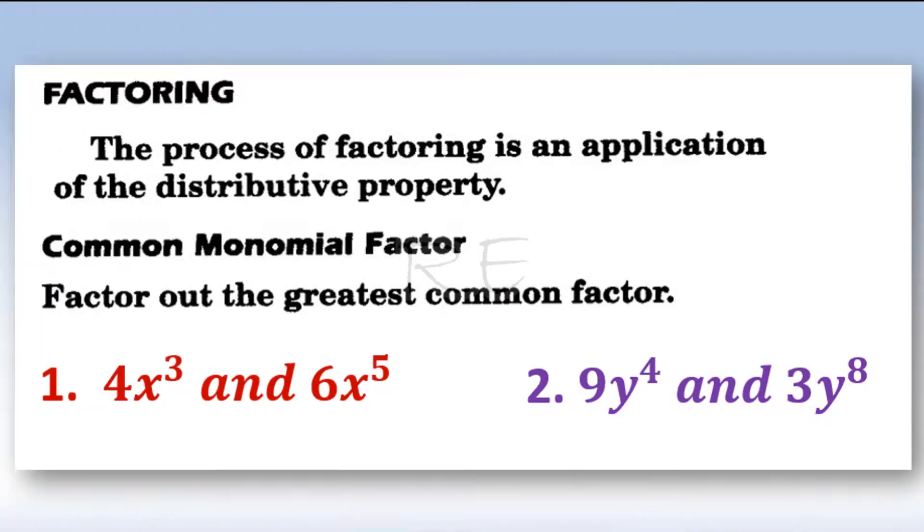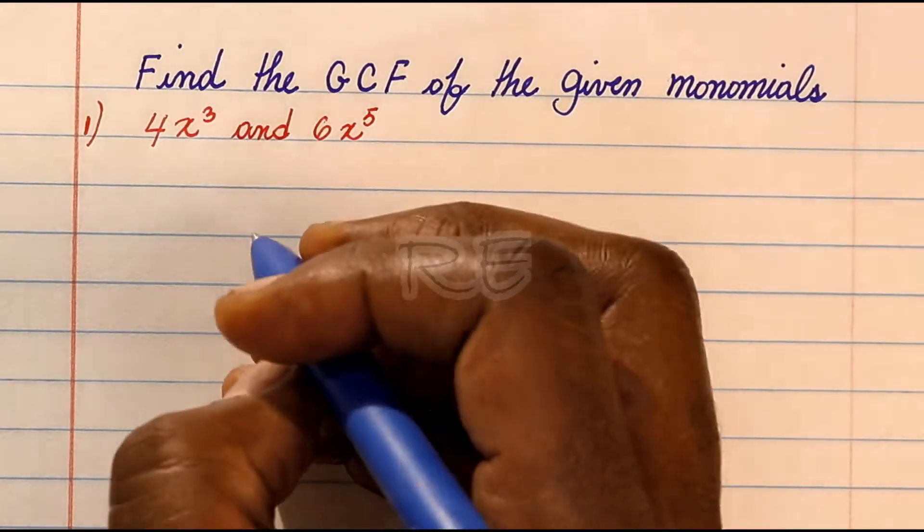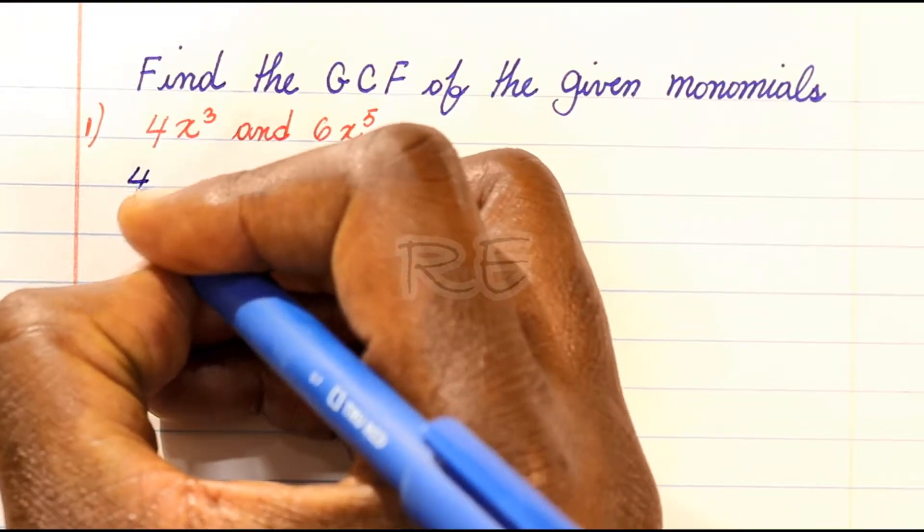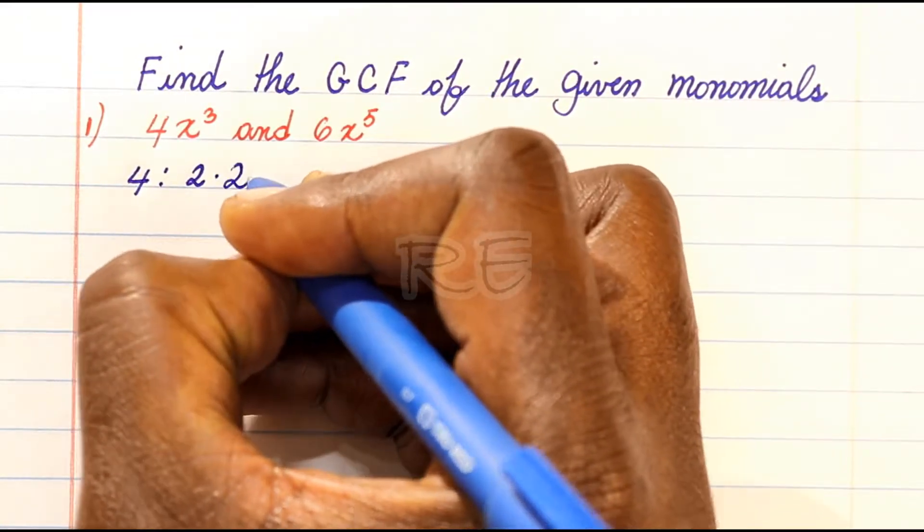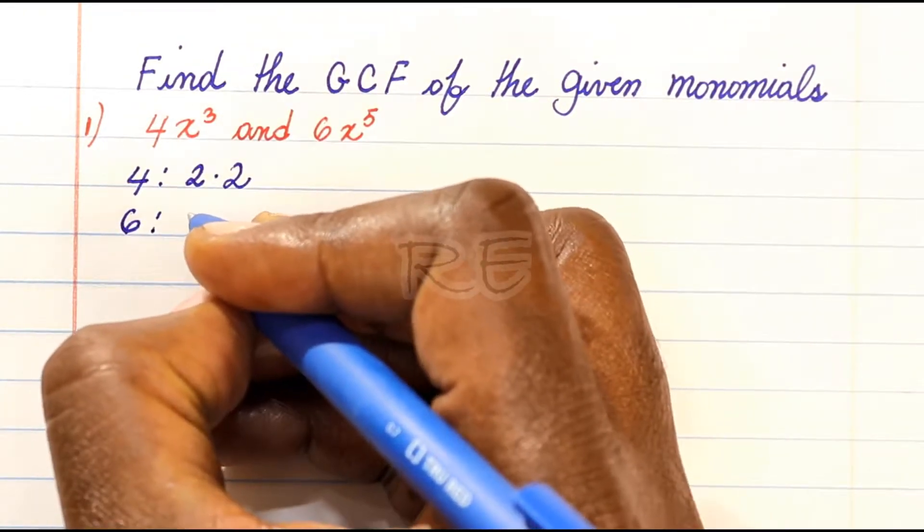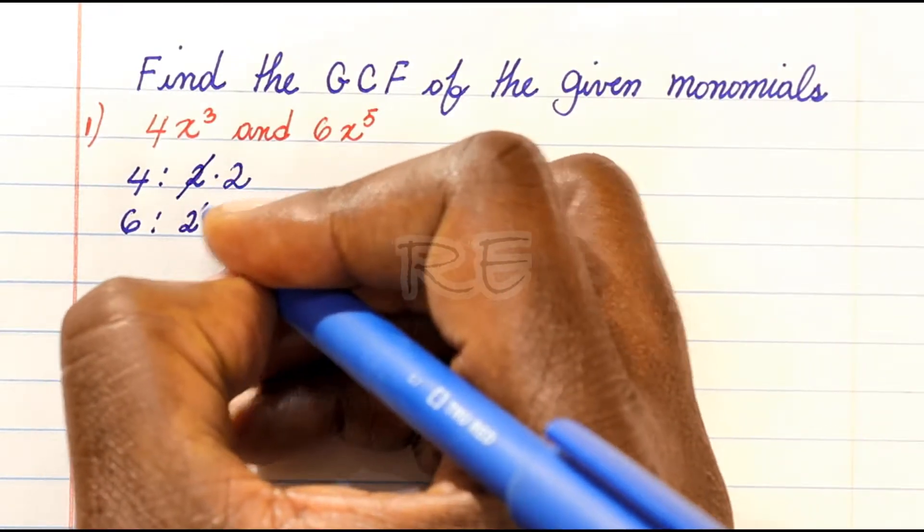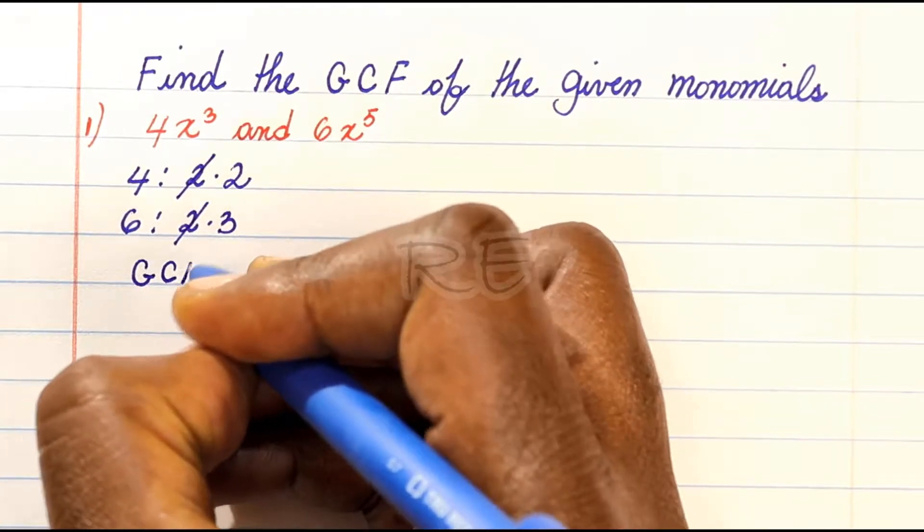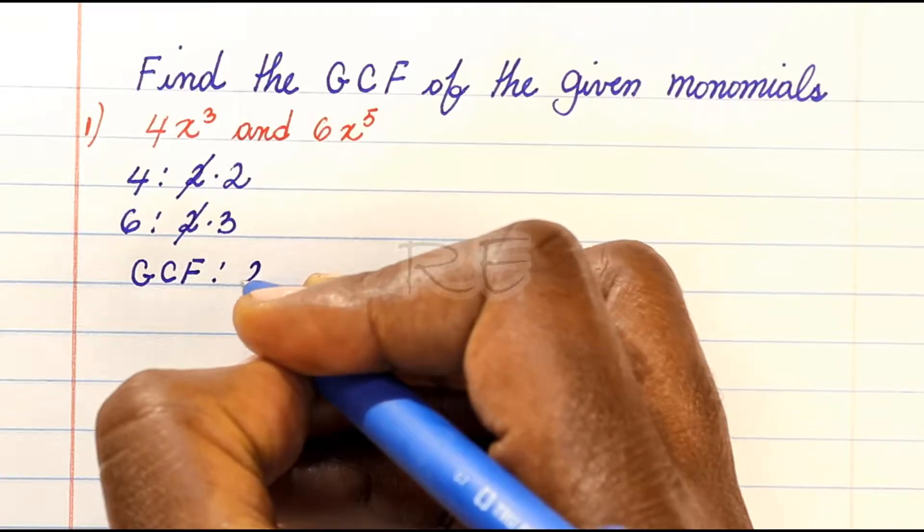To find the greatest common factor of two monomials, we will first look for the greatest common factor of the coefficients. 4 is 2 times 2 and 6 is 2 times 3. The largest number that is a factor of both is 2, so the numerical GCF is 2.